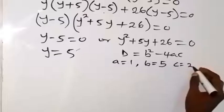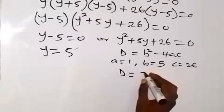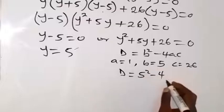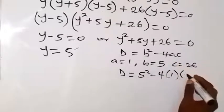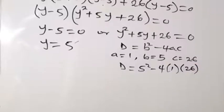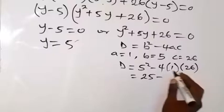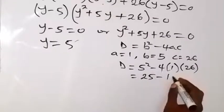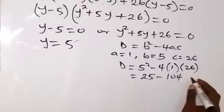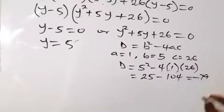And our c equals to 26. Then our discriminant becomes b squared as 5 squared minus 4ac. And a is 1, our c is 26. And from there, this becomes 25. 5 squared is 25 minus 4 times 1 times 26. That will give us 104. Then 25 minus 104, this is minus 79, minus 79, which is less than 0.